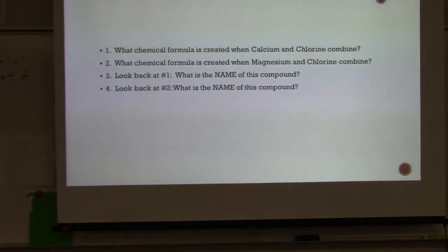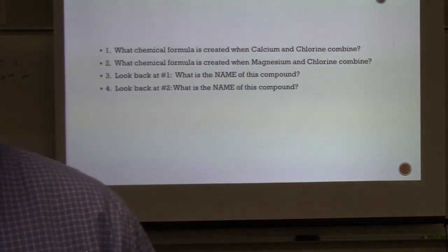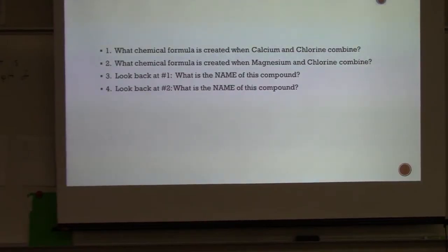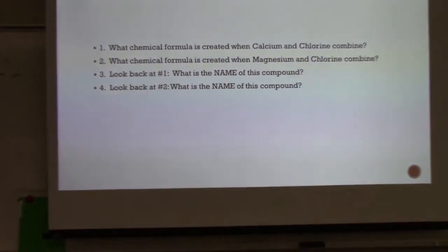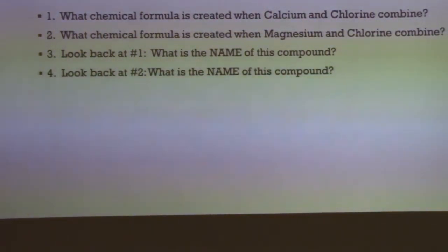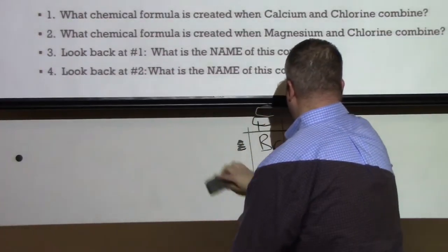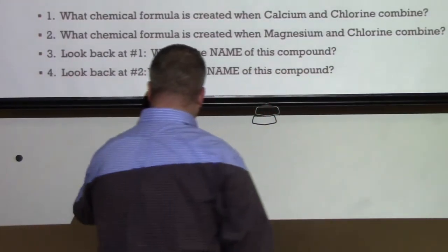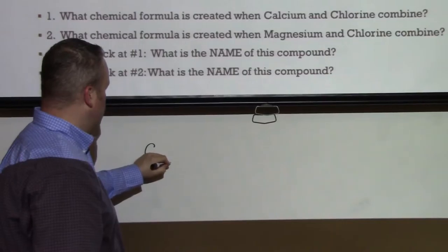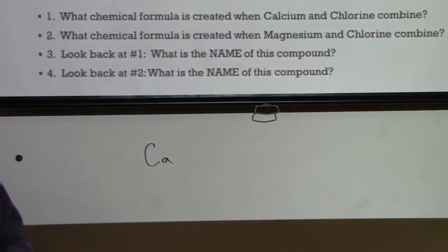So the first questions we want to look at are the following, one through four. What we have over here is, we want to look at chemical formula for calcium and chlorine and chemical formula for magnesium and chlorine, and then the names of both of those compounds. So to get started with this, you need to think about the fact that these are going to be ionic bonds. And to name those, we need to know the oxidation numbers.